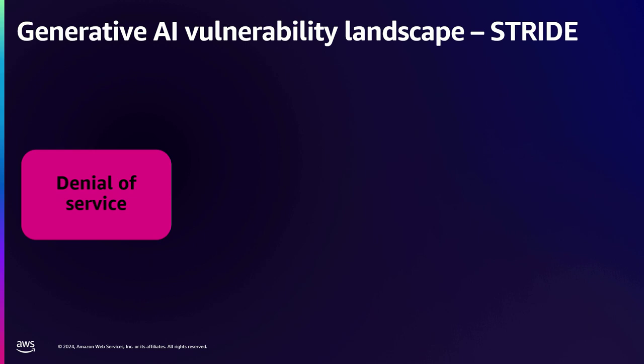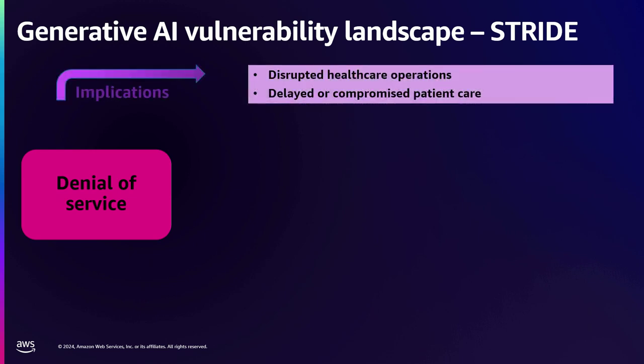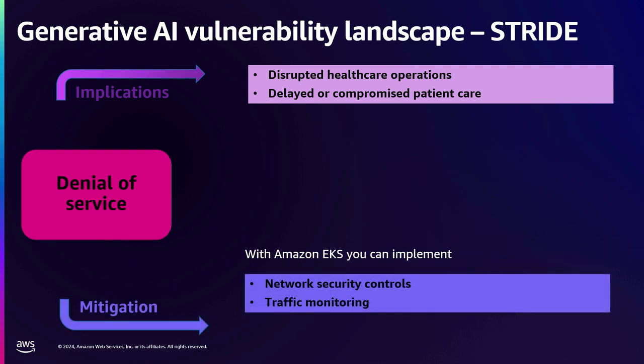Next up is denial of service, where resource exhaustion is experienced by denying service, and it usually happens at the network layer. One key concern is the potential for adversarial attacks, where an attacker may try to manipulate the input data to the model in a way that causes it to produce unintended or harmful outputs. This could be particularly problematic for sensitive healthcare applications, resulting in disrupted operations or compromised patient care.